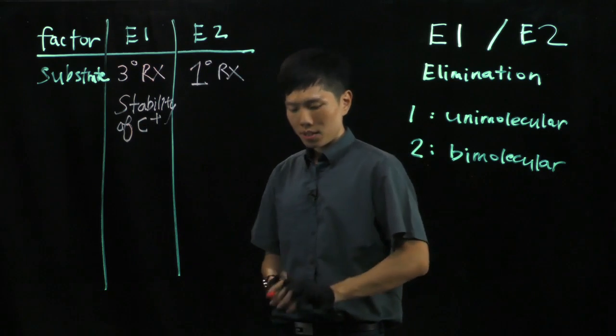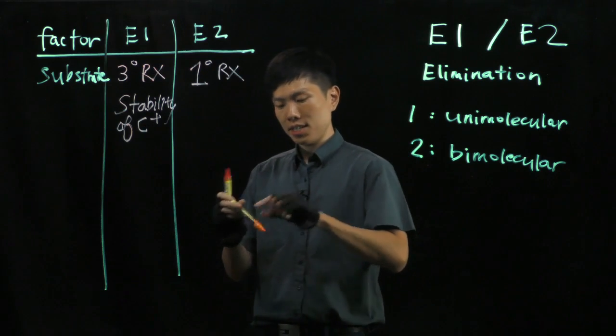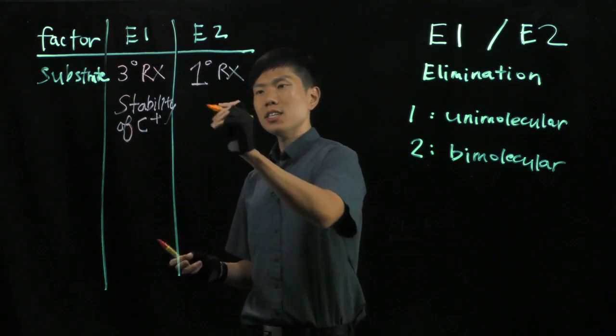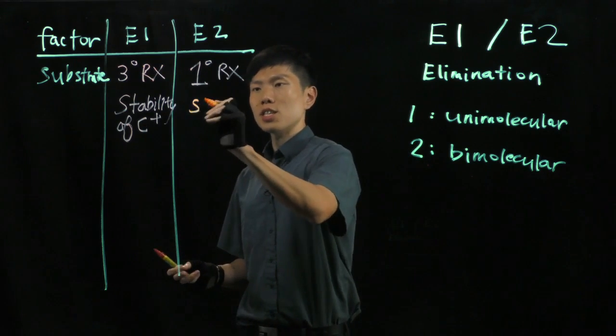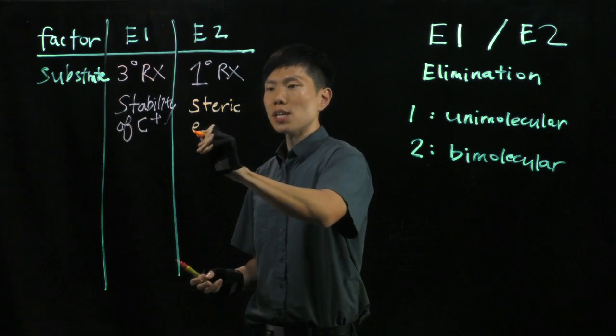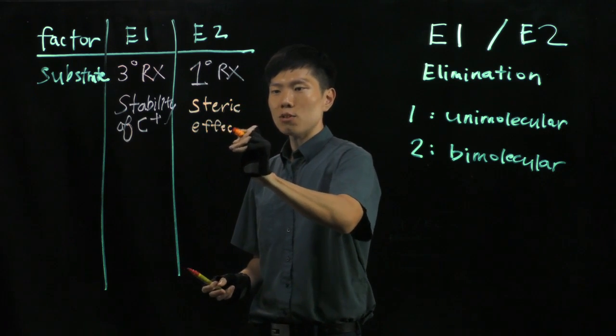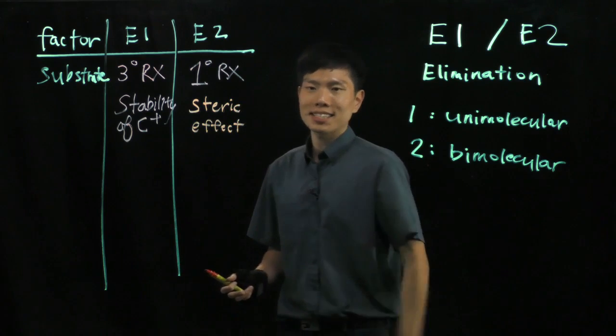For E2, it will tend towards steric hindrance. So the steric effect is the key thing you have to understand.